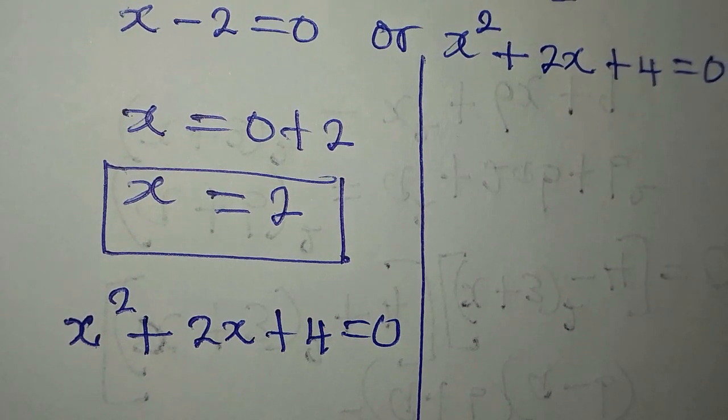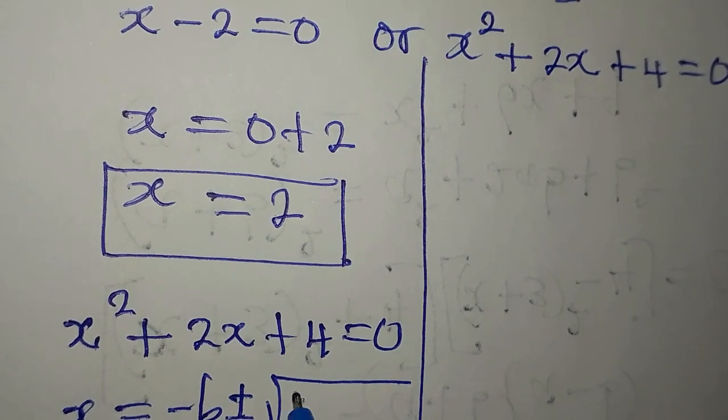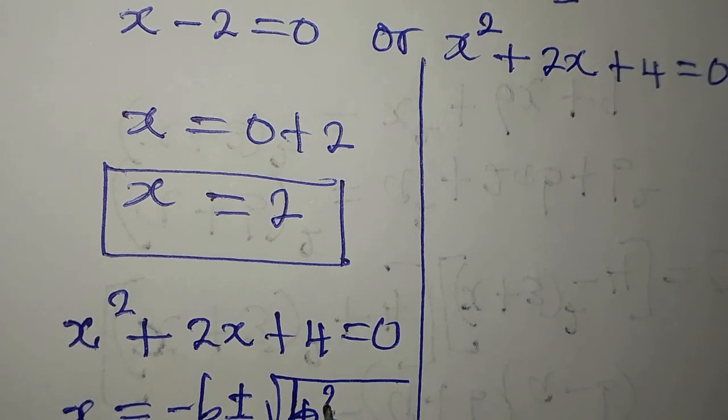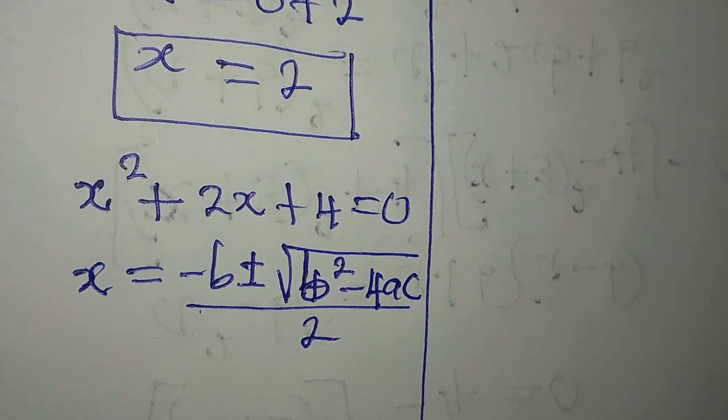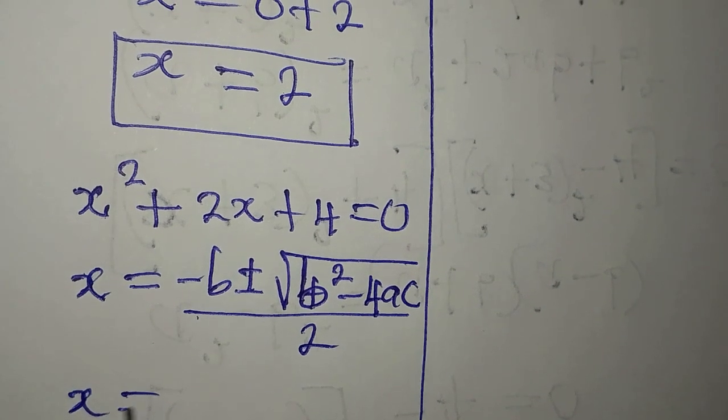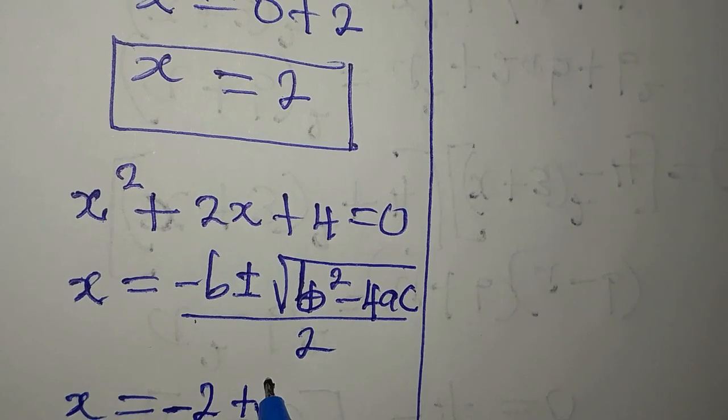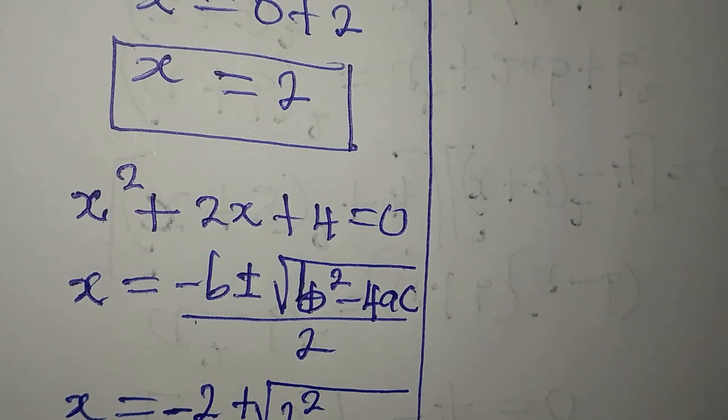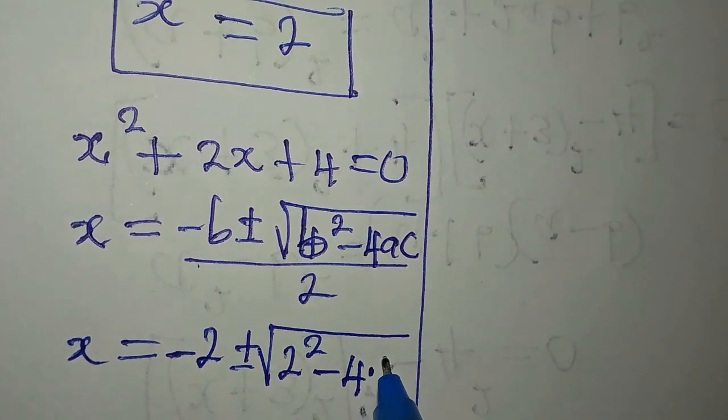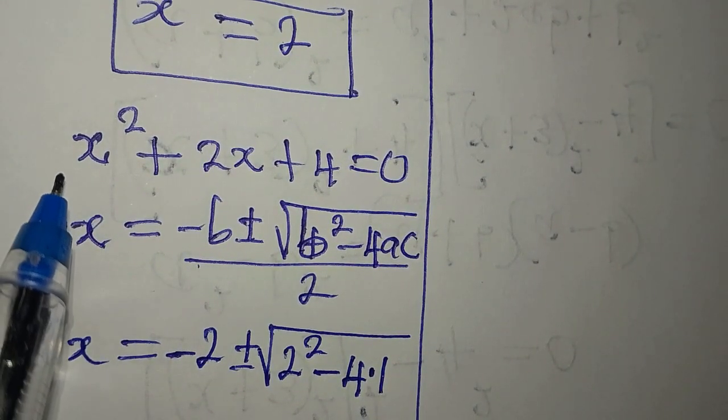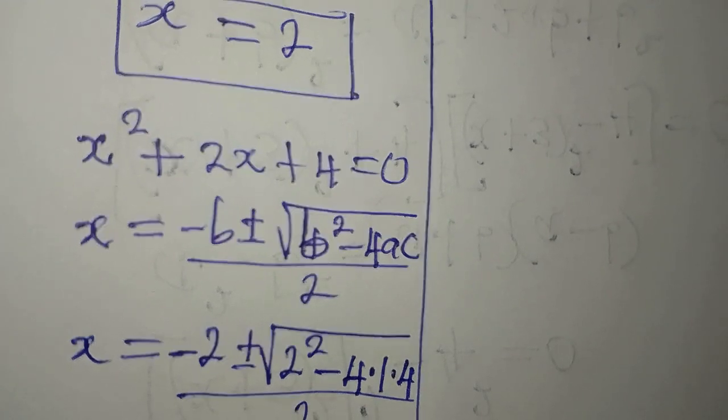We can use our formula for this. x equals minus b plus or minus square root of b squared minus 4ac, then we divide by 2. x will equal our b is 2, so minus 2, plus or minus b squared, that would be 2 squared, minus 4 times a, because a is the coefficient of x squared and that is 1, then c is 4, so we multiply this by 4, divide by 2 times 1.